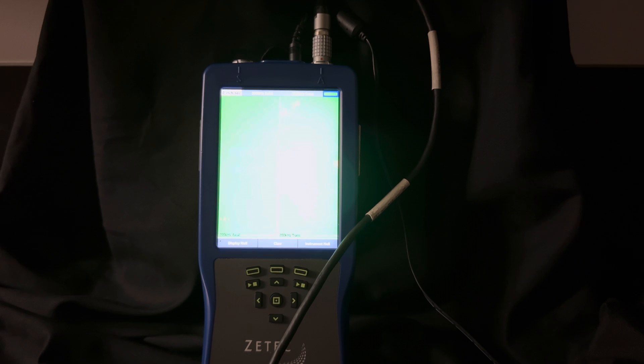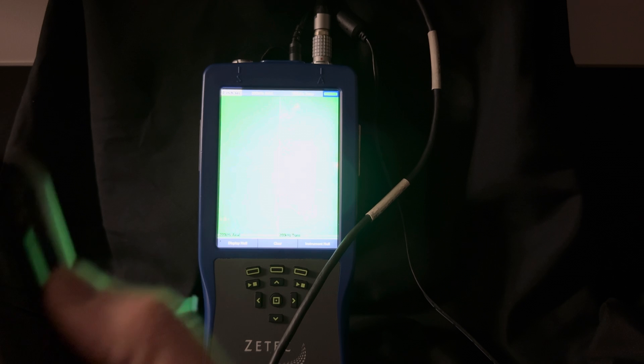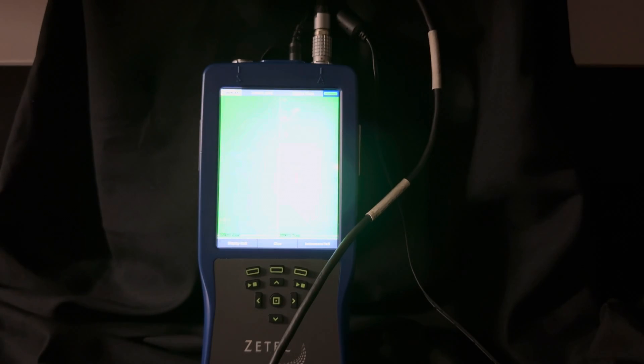You can tell if there's two flaws next to each other, how much space is between the two flaws, things like that. So you get a lot more information with the array probe. Higher POD because there's less chances of missing flaws.